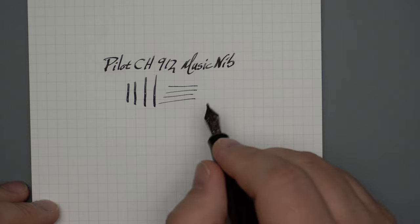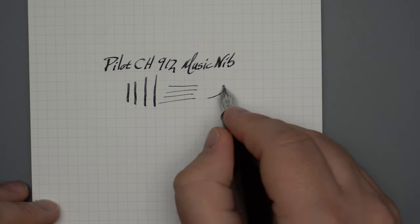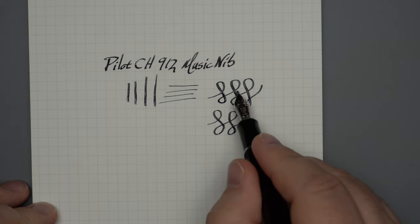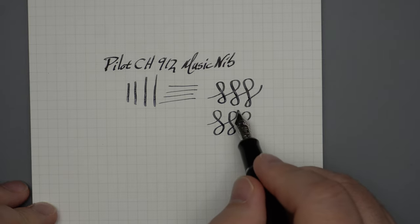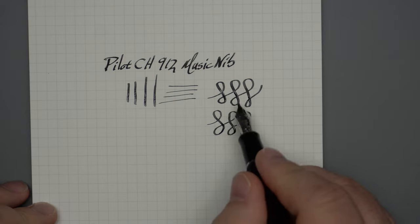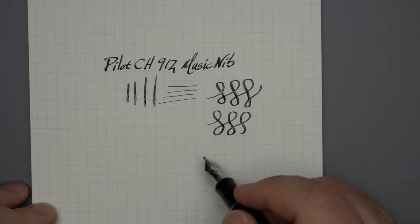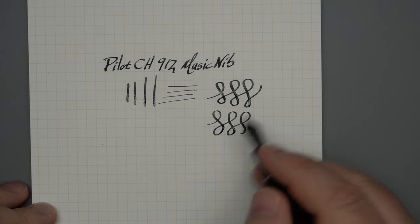Although it is a little softer than the other music nibs I have. You can see this one, I put a little bit of pressure on it and it did widen the tines just a little bit, but I don't really see any benefit to that. It doesn't flex enough. It's not soft enough to make a difference. And so don't lean on this nib. You're not really going to get anything out of it.